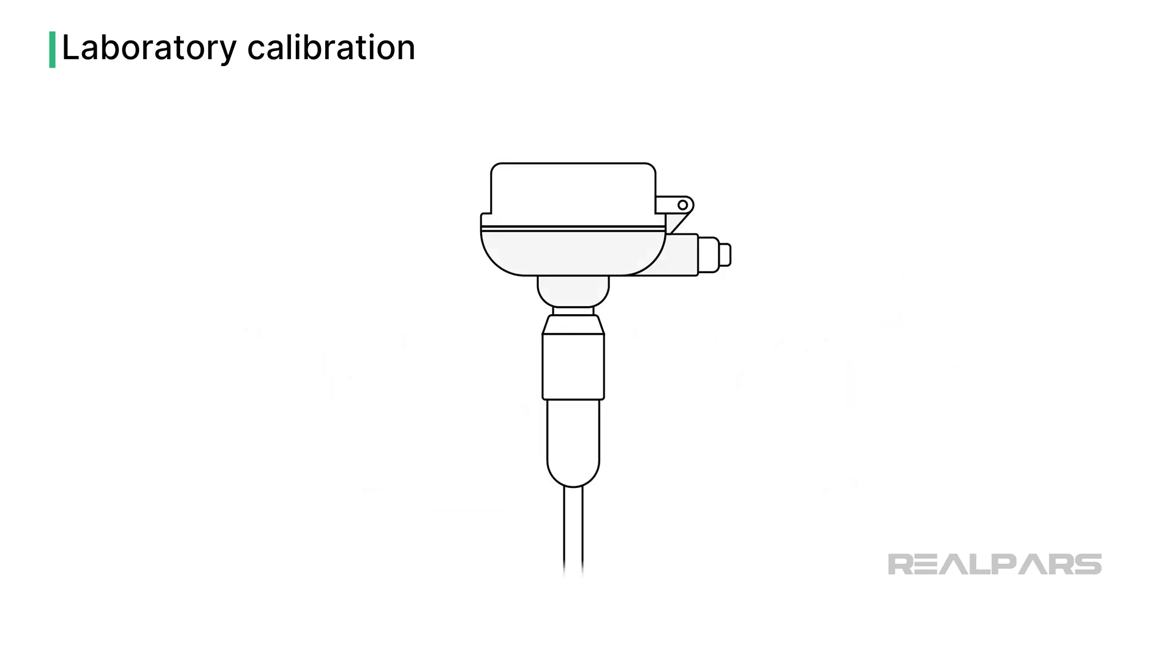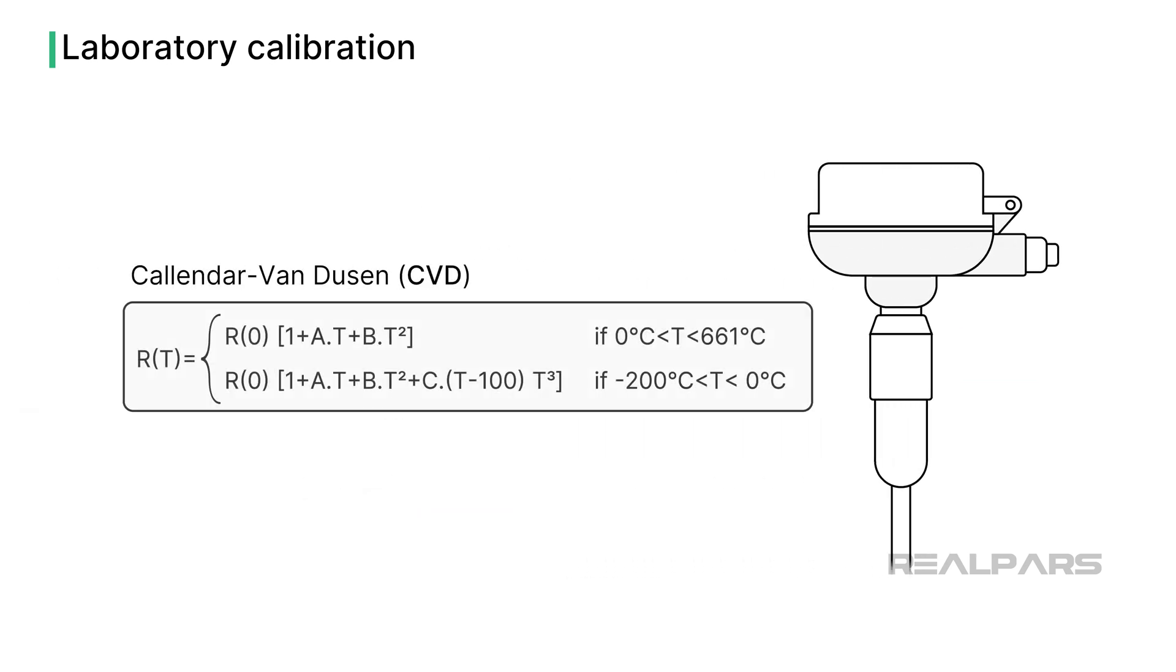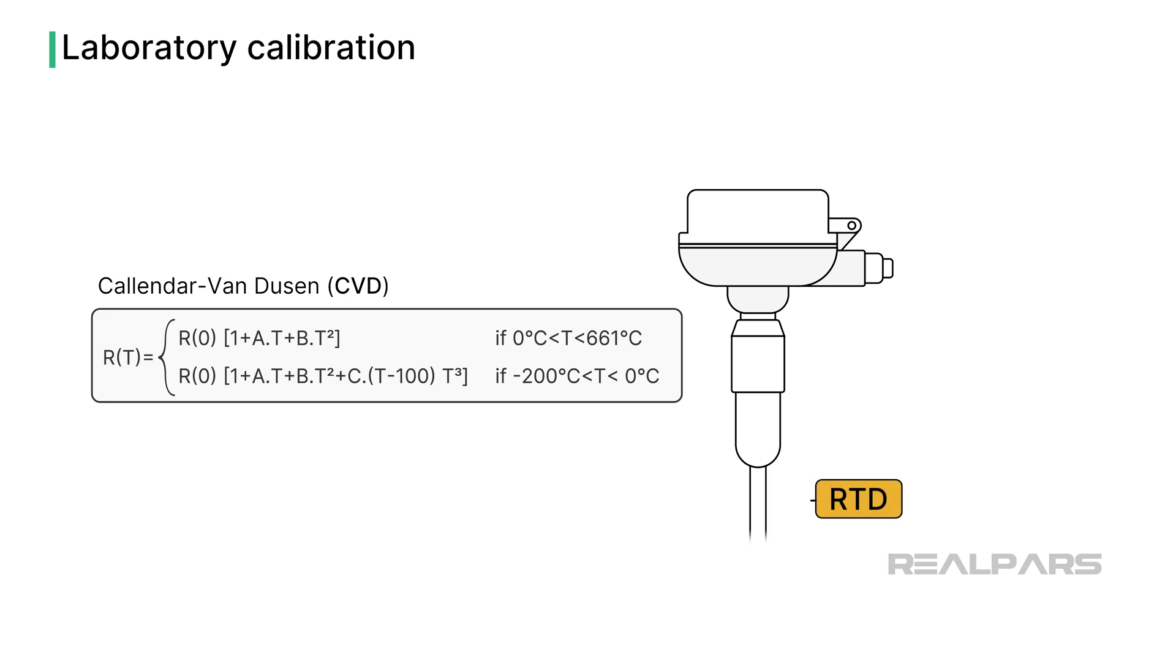Each RTD has unique Callendar-Van Dusen or CVD coefficients, which define its exact behavior. So why not match the transmitter with the RTD during the calibration process using the CVD coefficients?